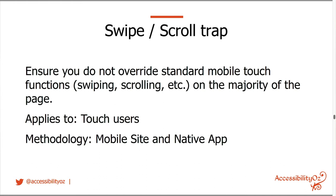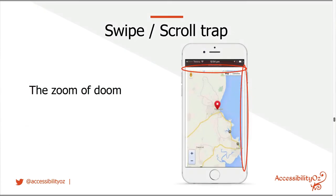The swipe scroll trap: ensure that you do not override standard mobile touch functions, such as swiping or scrolling, on the majority of the page. This is my favourite example — the Zoom of Doom. If you want to scroll the page, you have to hit tiny white areas outside the map, otherwise you scroll the map instead. You don't see this very often anymore, but I keep it in my presentations because I first presented it at a mobile accessibility presentation in 2014 in New York, and the day after, Coles was sued for being inaccessible.